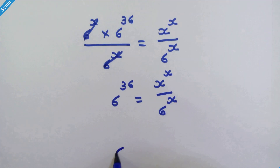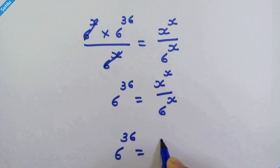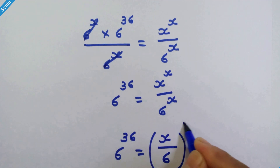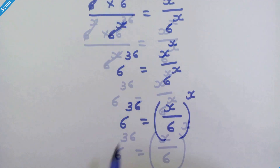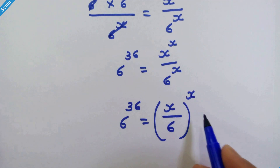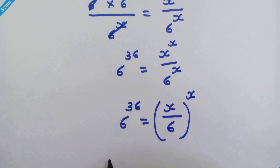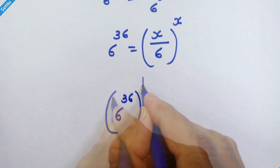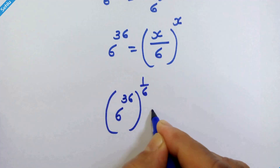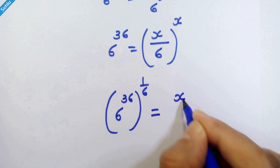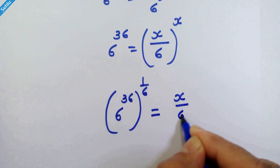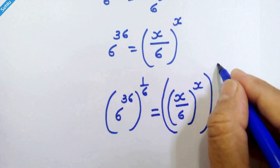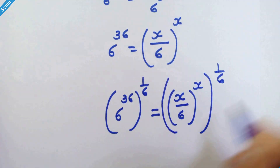Now we can write it like this: 6 raised to 36 is equal to x upon 6, whole raised to x. Now we will raise 1 upon 6 at both sides. So we have 6 raised to 36, whole raised to 1 upon 6, is equal to x upon 6, whole raised to x, whole raised to 1 upon 6.